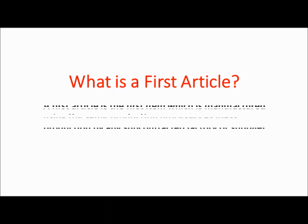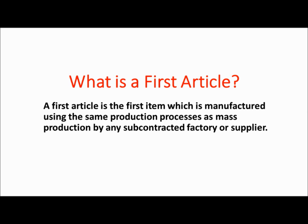What is a first article? A first article is the first item which is manufactured using the same production processes as mass production by any subcontracted factory or supplier.